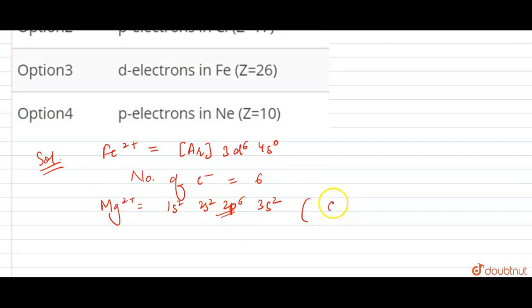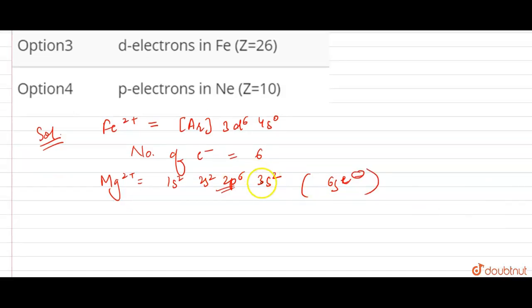What is our solution? Electronic configuration, first of all, of Fe2+: Argon 3D6 4S0, right? So the number of d electrons in the last shell is 6.